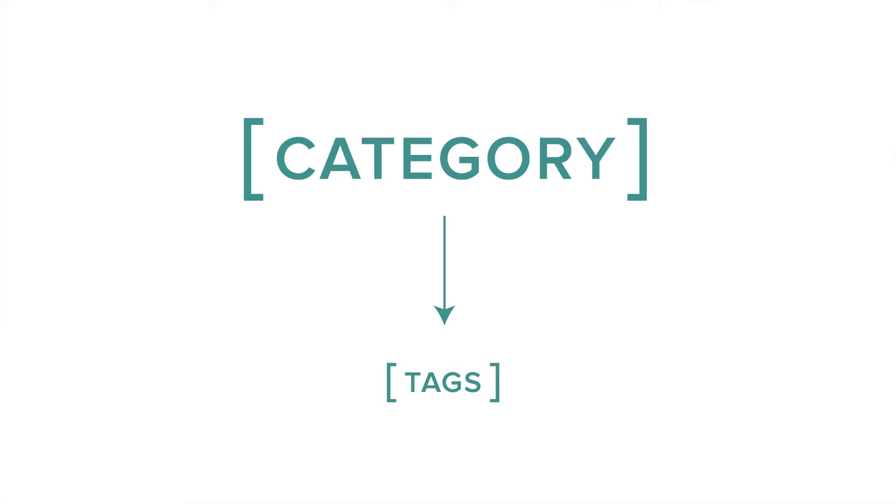One of the most common questions is: what's the difference between a category and a tag? A category is a more broad grouping. So if you are a food blogger, your categories might be breakfast, lunch, and dinner. And then your tags, which are more narrow and specific, might be waffles, omelets, and french toast to fit under the breakfast category.